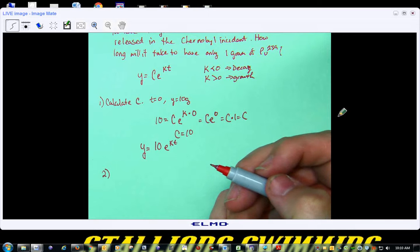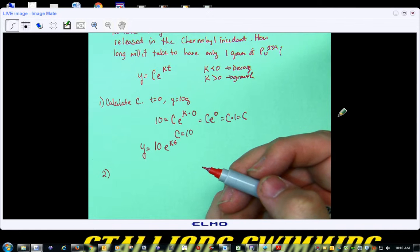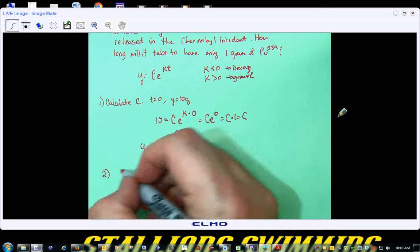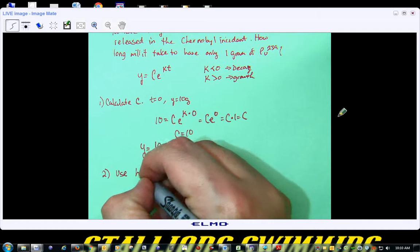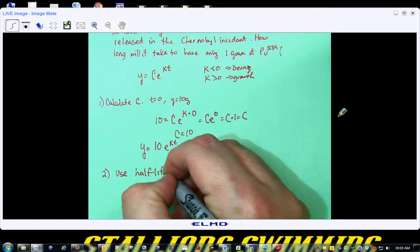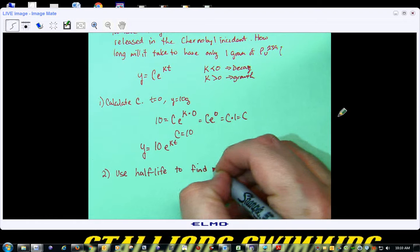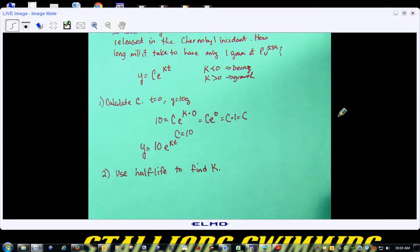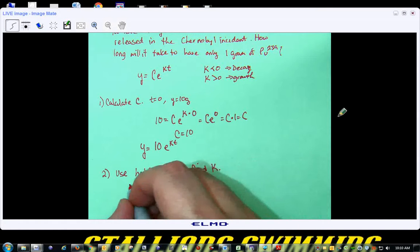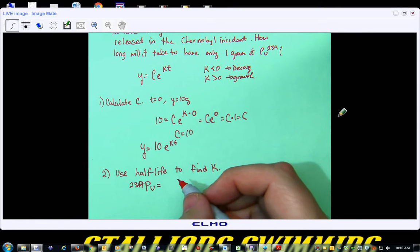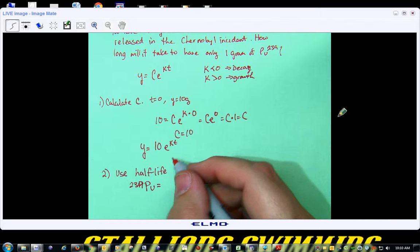The second part that you want to do is, in this case, we're going to use half-life. We're going to use half-life to find K. Now, for 239, for plutonium 239, what's the half-life? I gave you a list. 24,100 years.